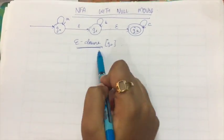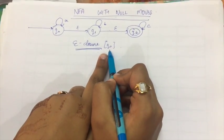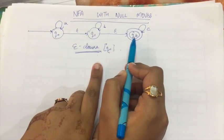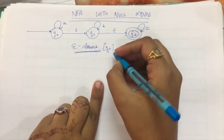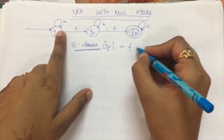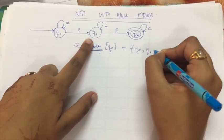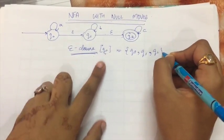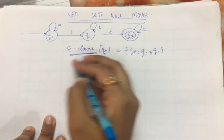Now, what is an E-closure? E-closure means that from a given state, say Q0, which states can I reach in a null NFA using only null moves? So the E-closure of Q0 equals Q0, Q1, and Q2 — because from Q0 I can go to Q1, and from Q1 I can go to Q2, ultimately reaching Q2.